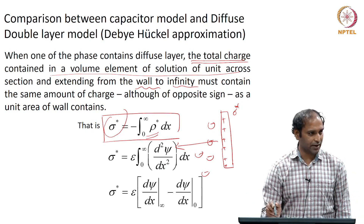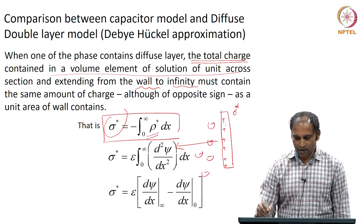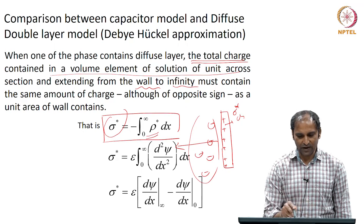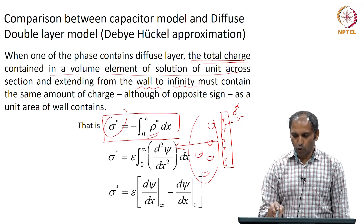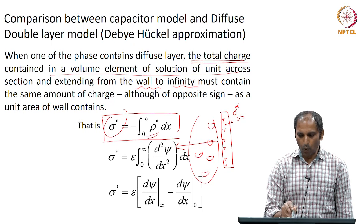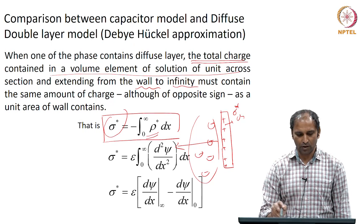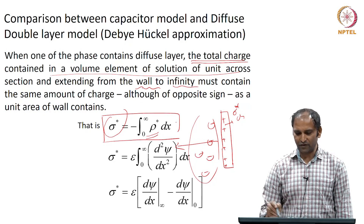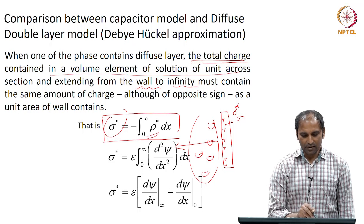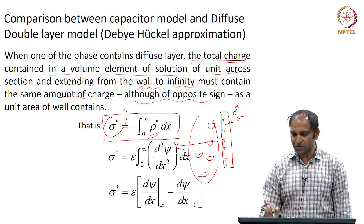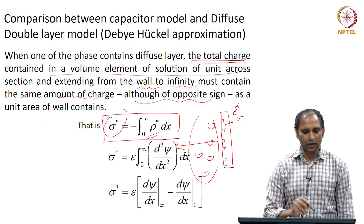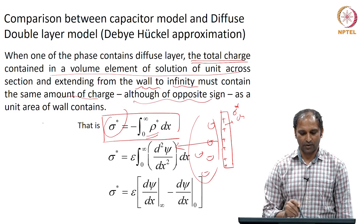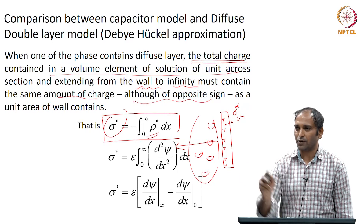When one of the phases contains a diffuse layer, that means this is a charged surface and I have a diffuse layer. The total charge contained in a volume element of solution across the cross-section, extending from the wall to infinity, must contain the same amount of charge, although opposite in sign, as the unit area of the wall contains. That is what this expression essentially tells you.